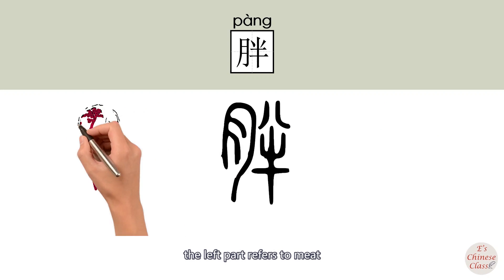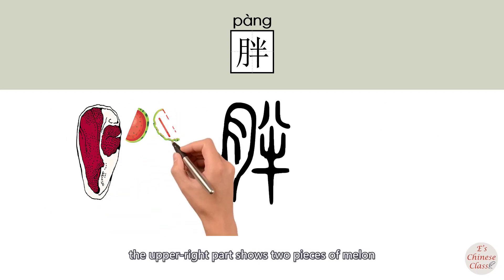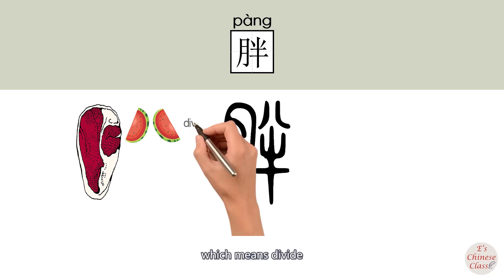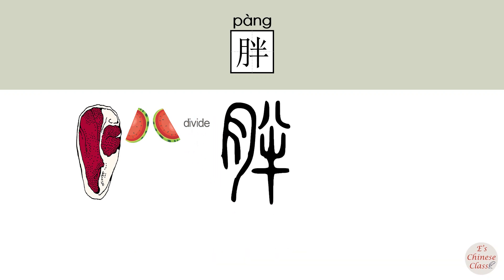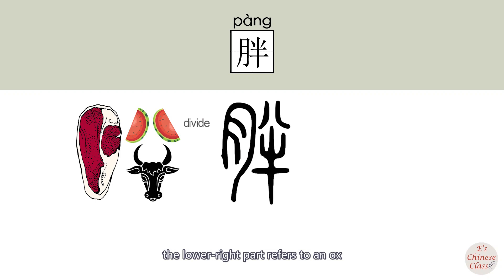The left part refers to meat. The upper right part shows two pieces of melon, which means divide. The lower right part refers to an ox. This character indicates kill the ox for sacrifice.